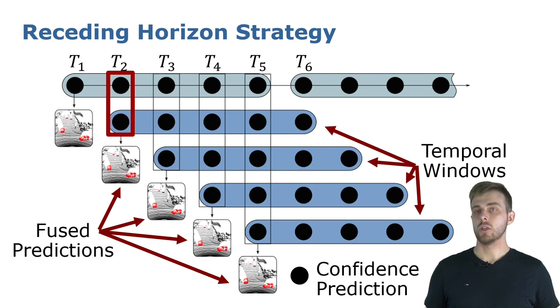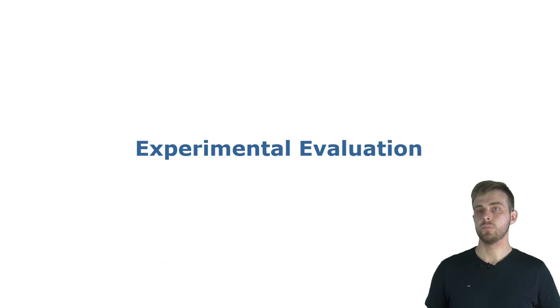For example, after predicting moving object confidence scores for the first 5 scans and shifting the temporal window by 1, we can already refine the previous prediction for the scan at time 2. To do this, we implemented a binary Bayes filter that recursively updates the log odds of each point to be moving.